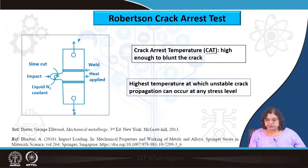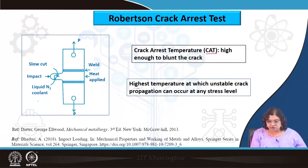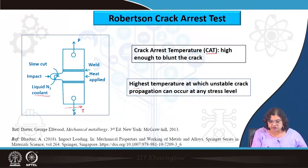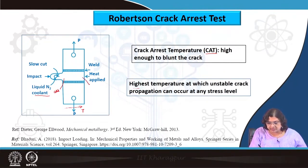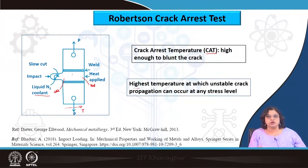The specimen is 6 inches wide. In option one, liquid nitrogen acts as coolant at one end and heat is applied at the other, creating the temperature gradient. The crack propagates from the cold end to the hot end until it is arrested at the crack arrest temperature — the point at which plastic deformation is sufficient to completely stop crack growth.